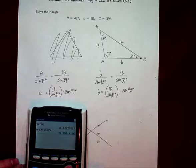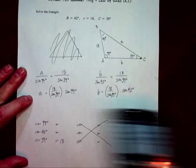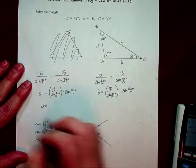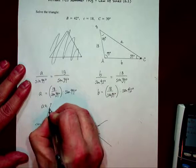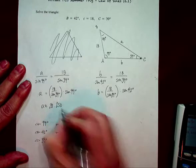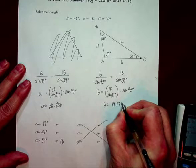But I definitely am going to multiply it by sine of 99. And then I'm going to multiply it by sine of 42. And I'm going to get an A value